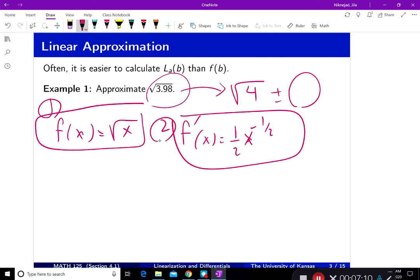Then step three is to decide where this function is easy to compute. And I know at x equal to 4, f of 4 is going to be the square root of 4 equal to 2.